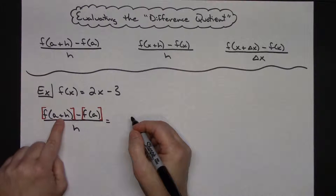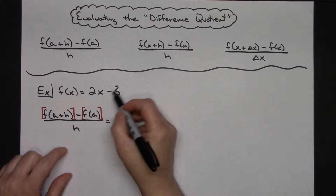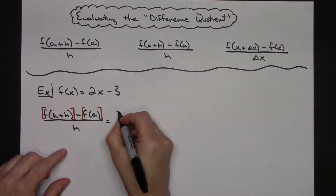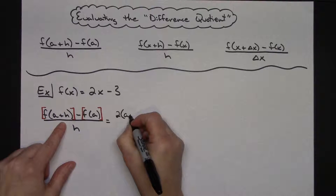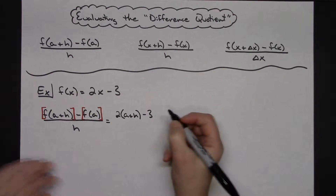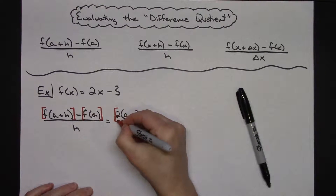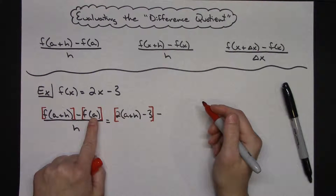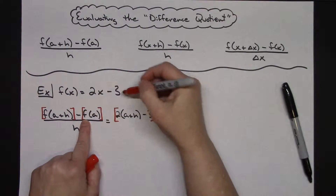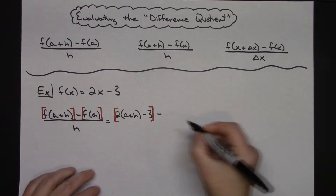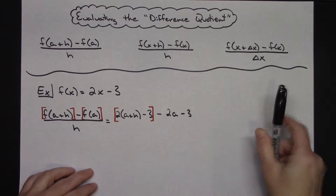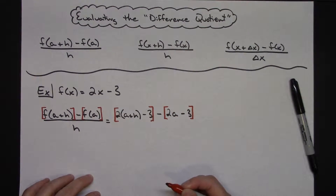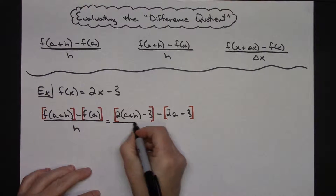Reading this tells me to take a+h and plug it into my function. My function only has one x, so that's the only place I have to substitute. So I get 2 times the quantity (a+h), then minus 3 to finish the entire function. That's the first half. Now for the second half, I take a and plug it into the function — again only one place — giving 2a minus 3. I'm subtracting the entire quantity, which is why it's important to bracket it off. Then all over h.